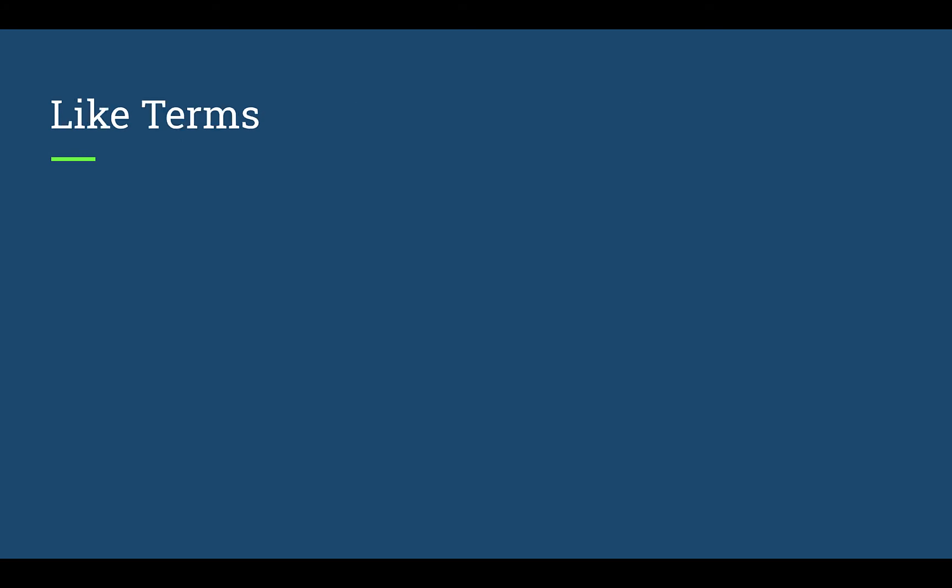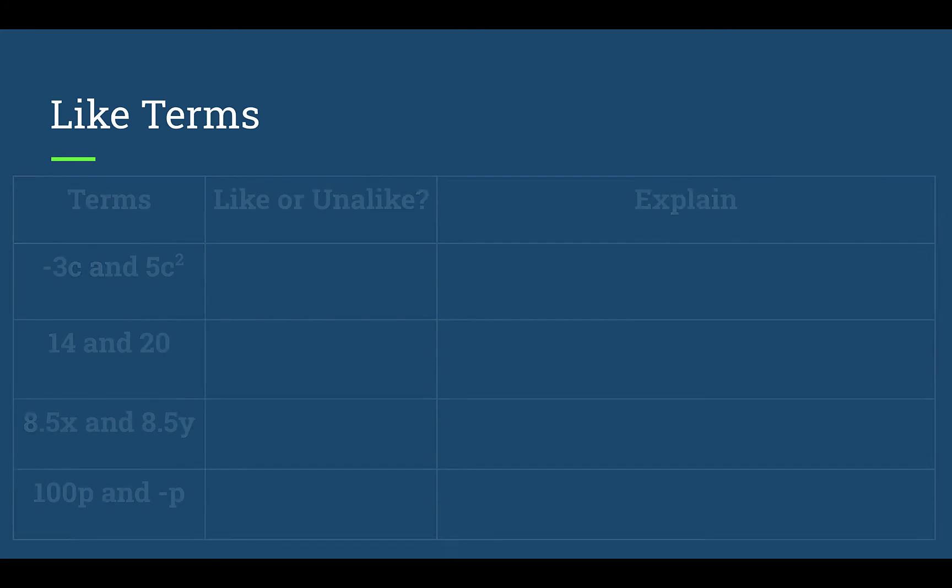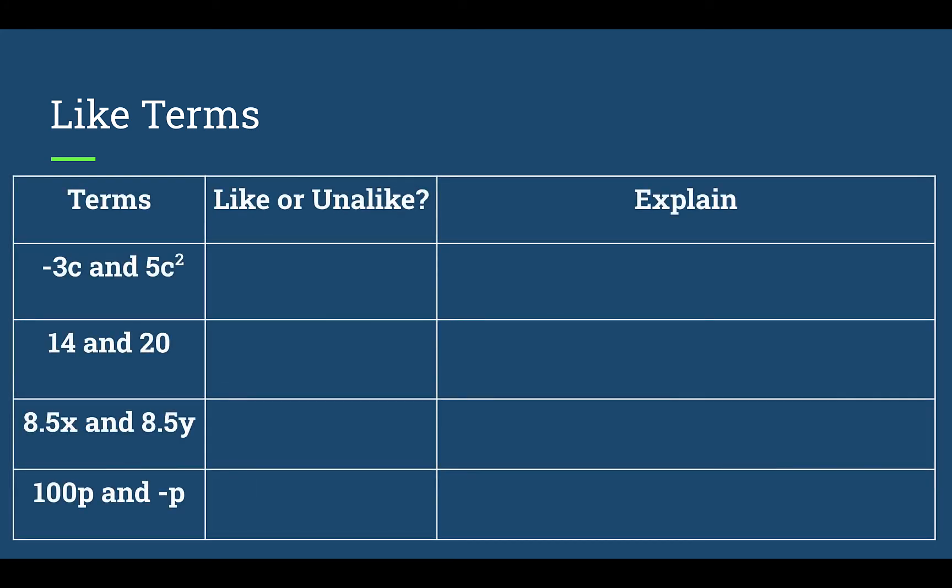Now let's look at like terms. They are going to be very important for us when we're simplifying expressions and then moving into solving equations. So we need to decide if terms are like or unalike. So not alike. Now, in order for terms to be like terms, they need to have the same variable, and that variable has to be to the same exponent.